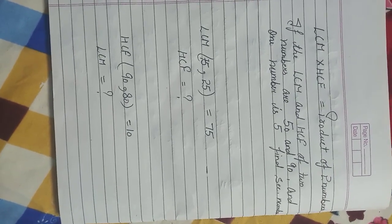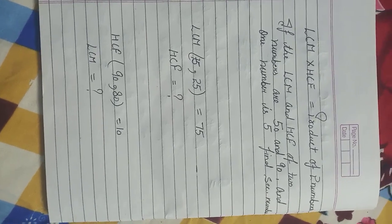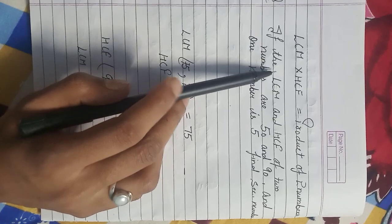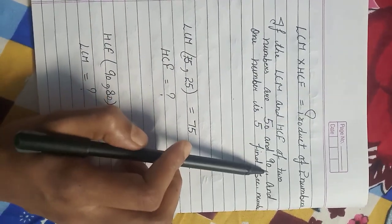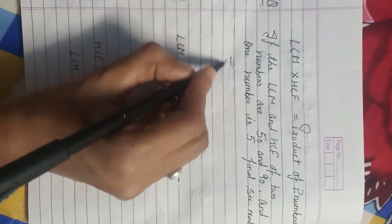Good morning guys. We will do LCM and HCF questions. If the LCM and HCF of 2 numbers are 50 and 90, and one number is 5, find the 2nd number. Here you have to put your formula.